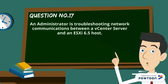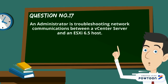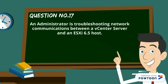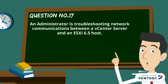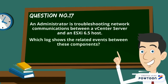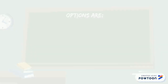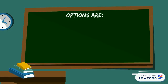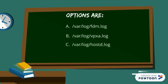Here is question number 17. An administrator is troubleshooting network communications between a vCenter server and an ESXi 6.5 host. Which log shows the related events between these components? Options are: A) /var/log/fdm.log, B) /var/log/vpxa.log, C) /var/log/hostd.log, and D) /var/log/auth.log.